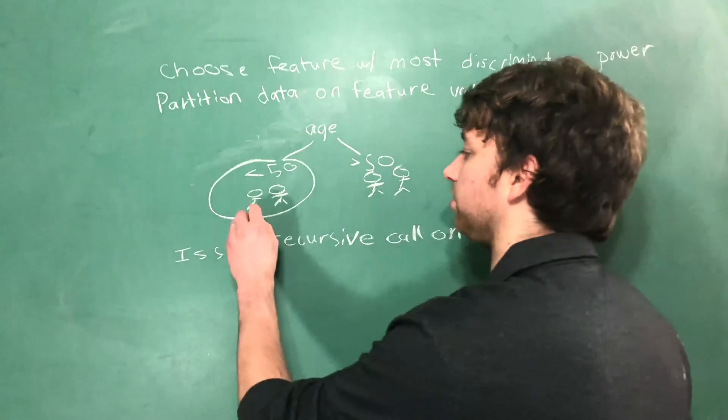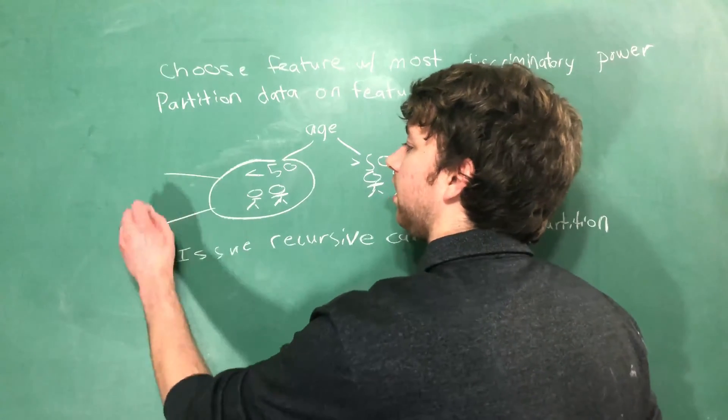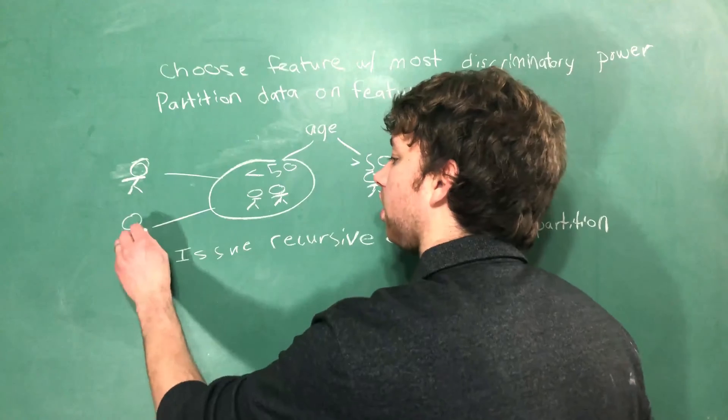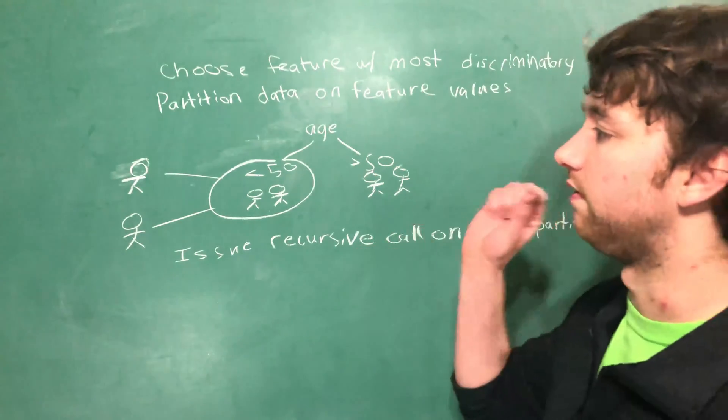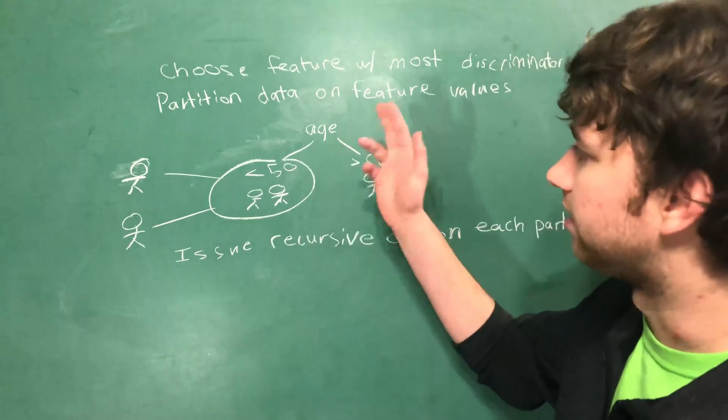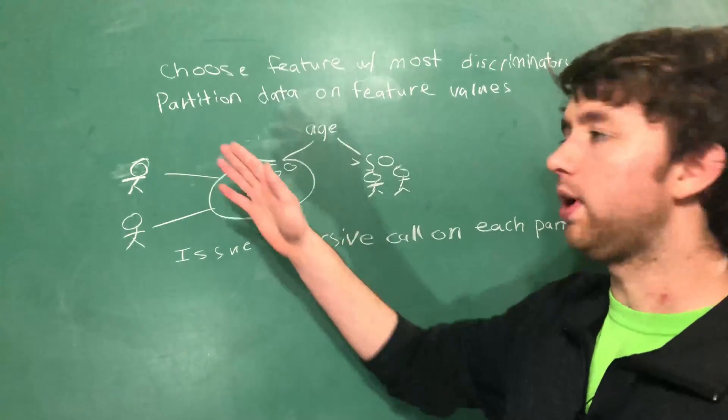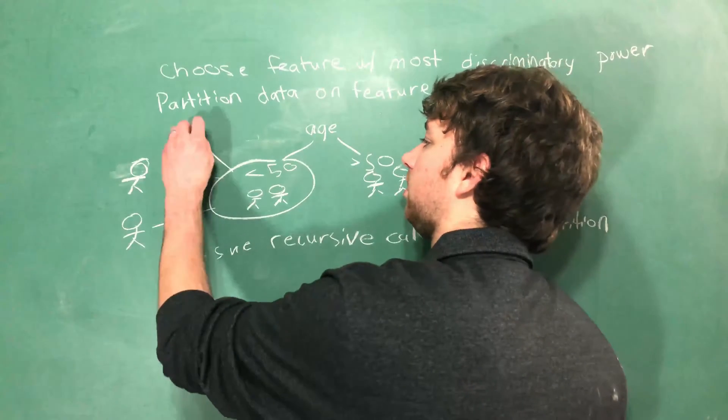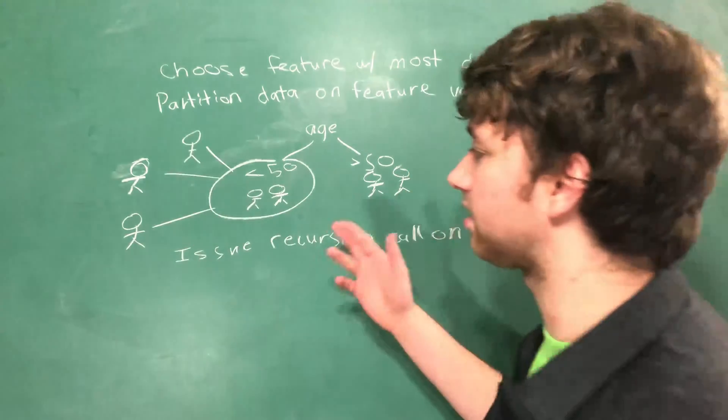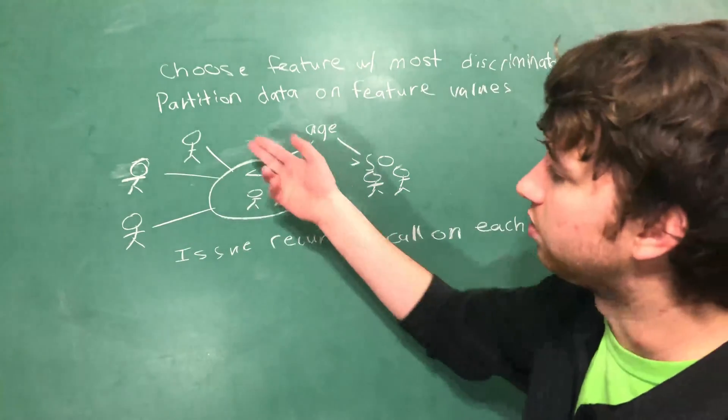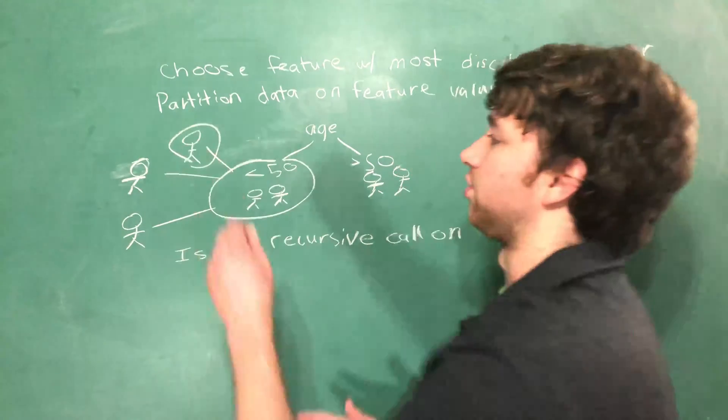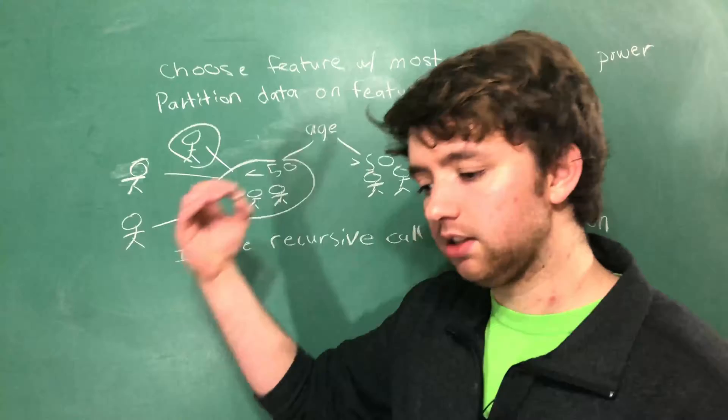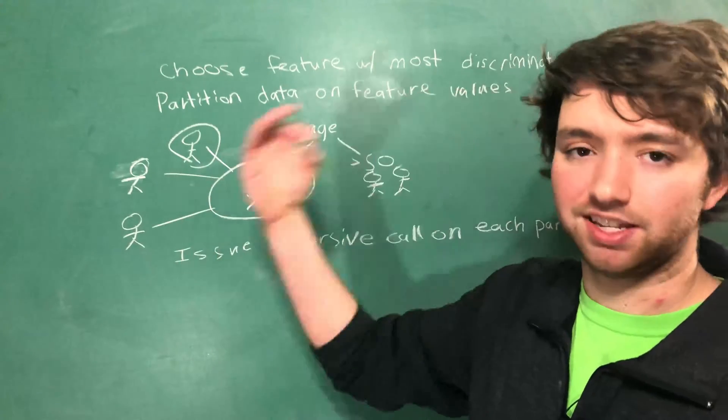Once it does that, it'll split our data into two groups, into as many groups as there are descriptive feature values. So if it's weight, we could have underweight, average, and above average, for example. And because this is recursive, it's going to go down to the next branch and do the same thing. And it's going to do that until it hits a base case.